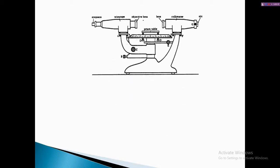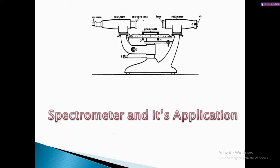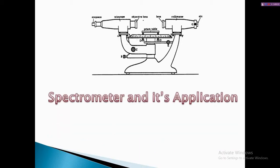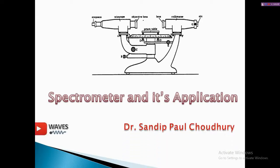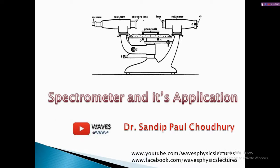Before I really start, let me give you a brief on what we are going to talk about today. If you're working in a lab, most of you must have seen this instrument — basically a spectrometer, an optical device with very important applications. I'm going to briefly discuss its parts before we go into the simulation. The topic for this is spectrometer and its applications. I'm Dr. Sandeep Paul Chaudhary — you can send me your queries on the YouTube channel or contact me on Facebook.